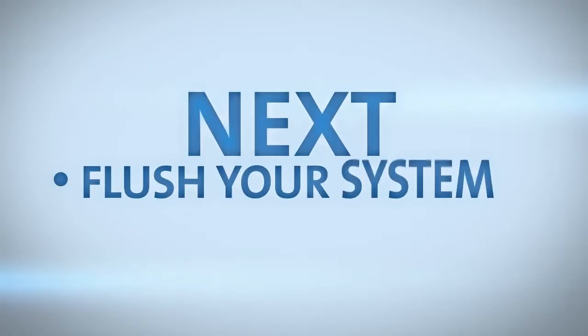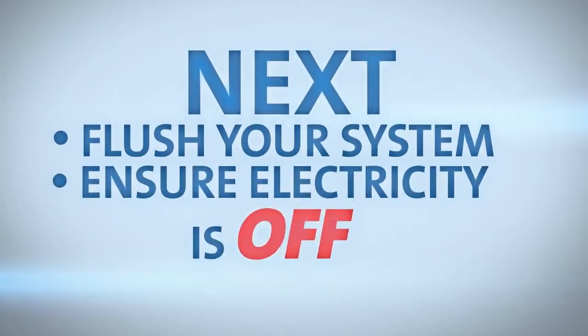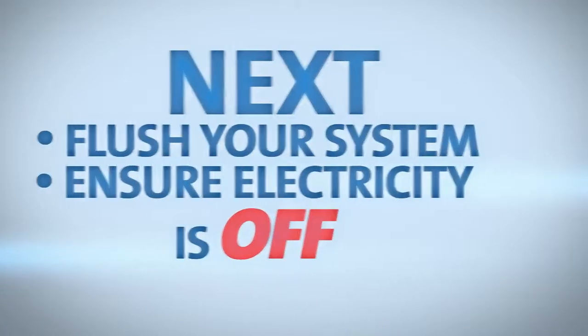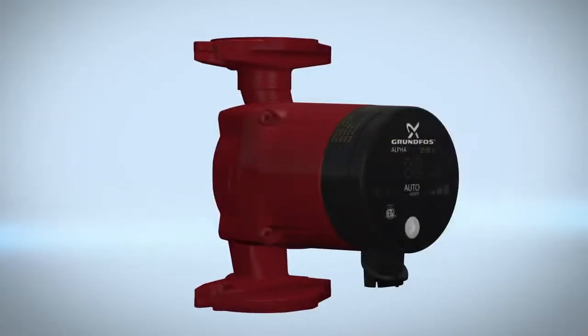Next flush your system and ensure electricity to the area is turned off. You're now ready to install your Alpha circulator pump. Locate the arrows on the pump housing. These arrows indicate the direction of flow.